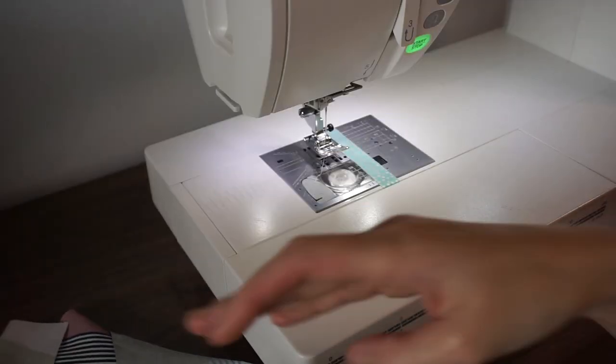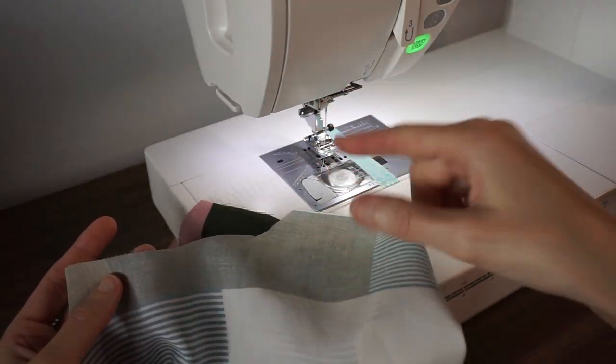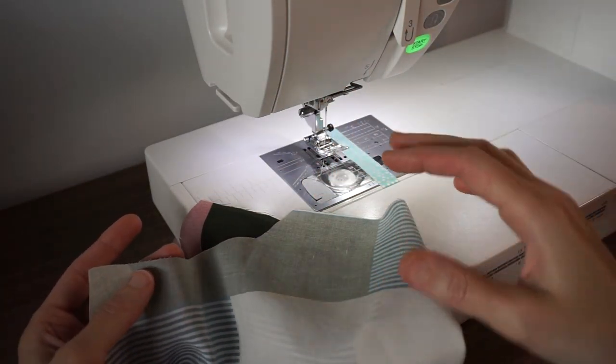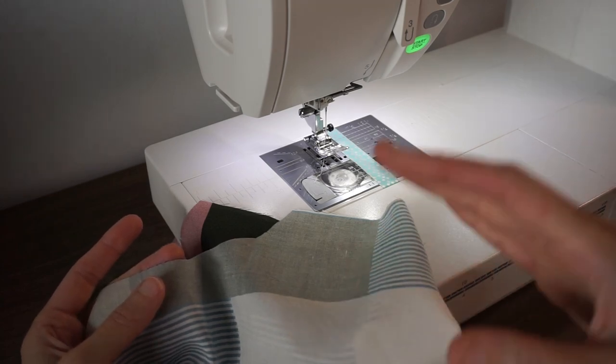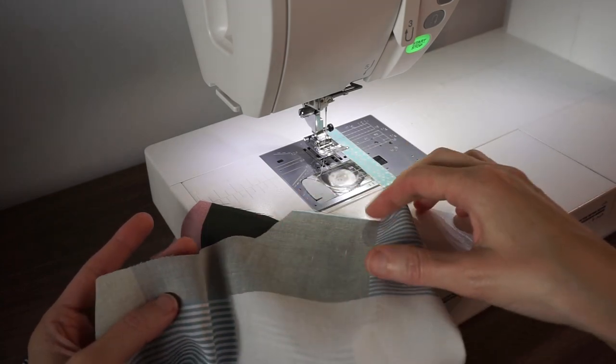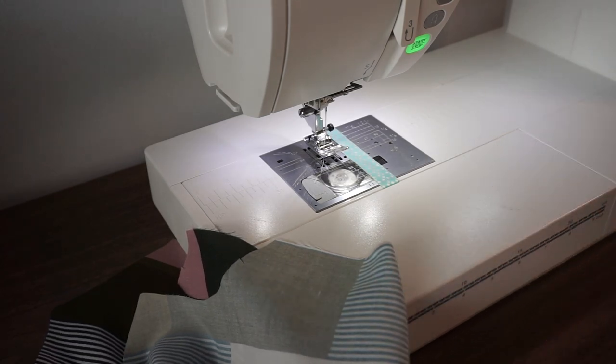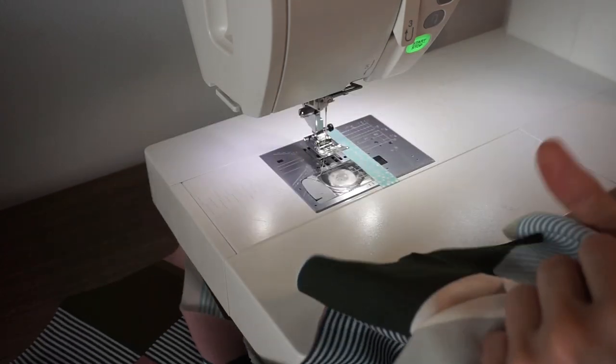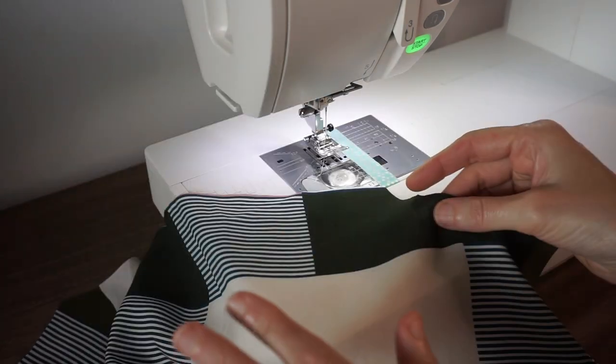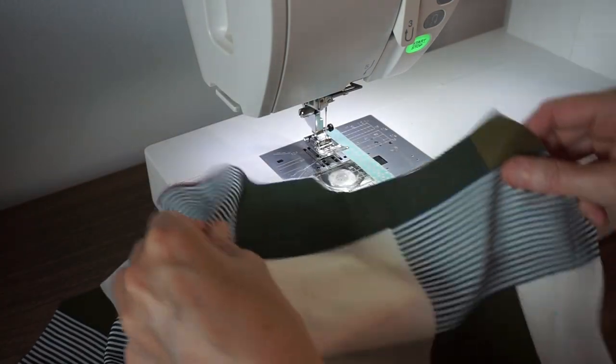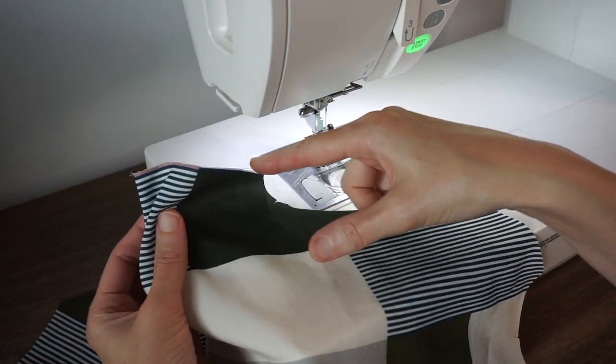We're going to start off by stay stitching the armhole on the front bodice, and this is important to prevent stretching in this curved area. We're going to stitch a straight stitch slightly less than our seam allowance, and they always recommend that you start at the top and go down.